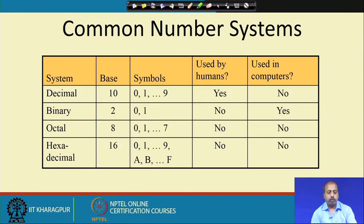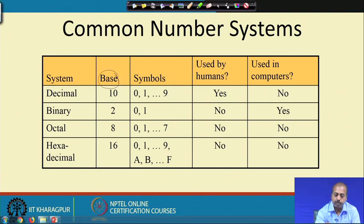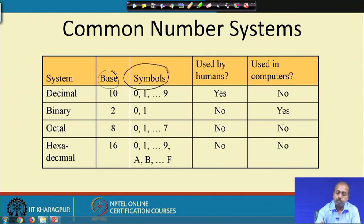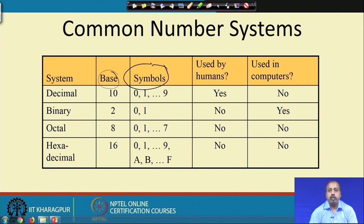Any number system we look into will have two important components: one is called the base of the number system, which represents how many symbols can be used, and the other part is the symbol itself. For any number system, you have to specify a base. As soon as you tell me a base, we can assume there will be that many different types of symbols available.